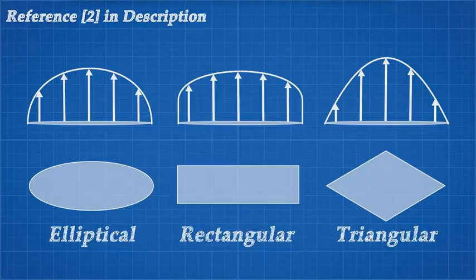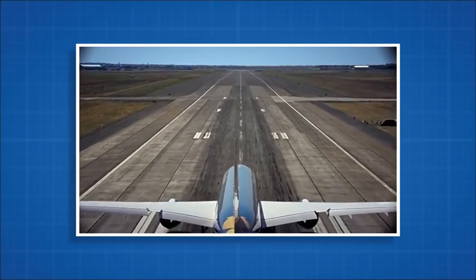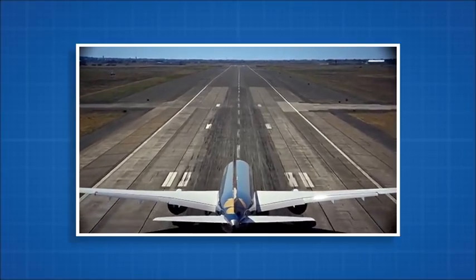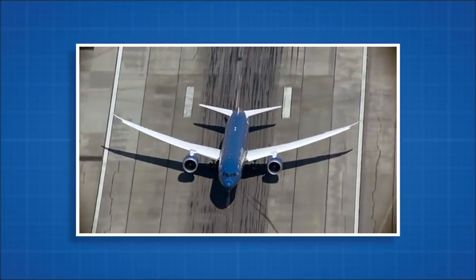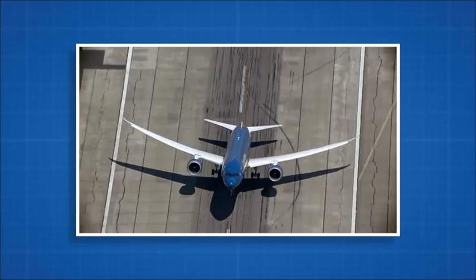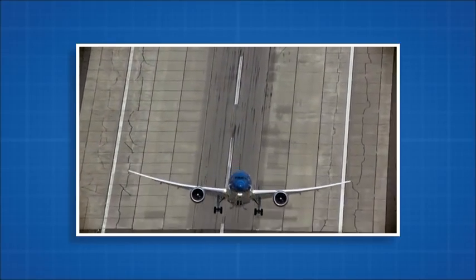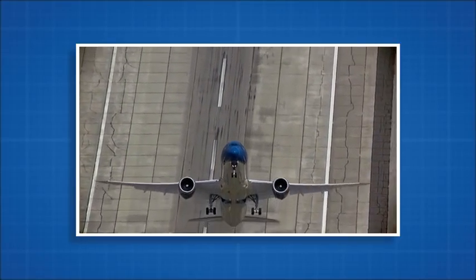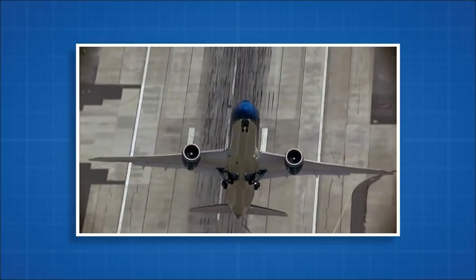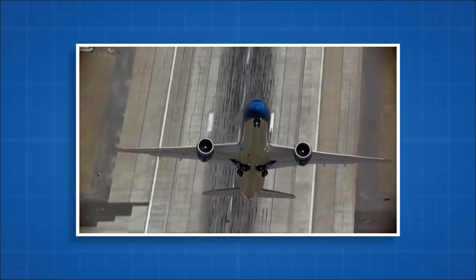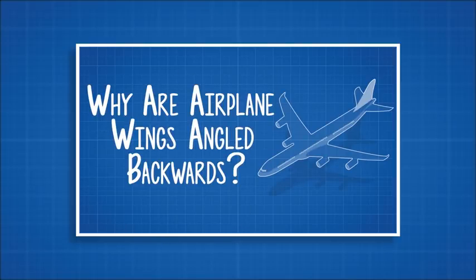Winglets are just one way to do this. Boeing's latest plane, the Boeing 787 Dreamliner, has done away with winglets in favour of a raked wingtip, which sweeps the tip of the wing backwards. Boeing have said that their raked wingtips have improved fuel efficiency by 5.5% over the 4.5% for conventional wingtips. You can learn why this alters the lift distribution by watching my video, 'Why are plane wings angled backwards?'